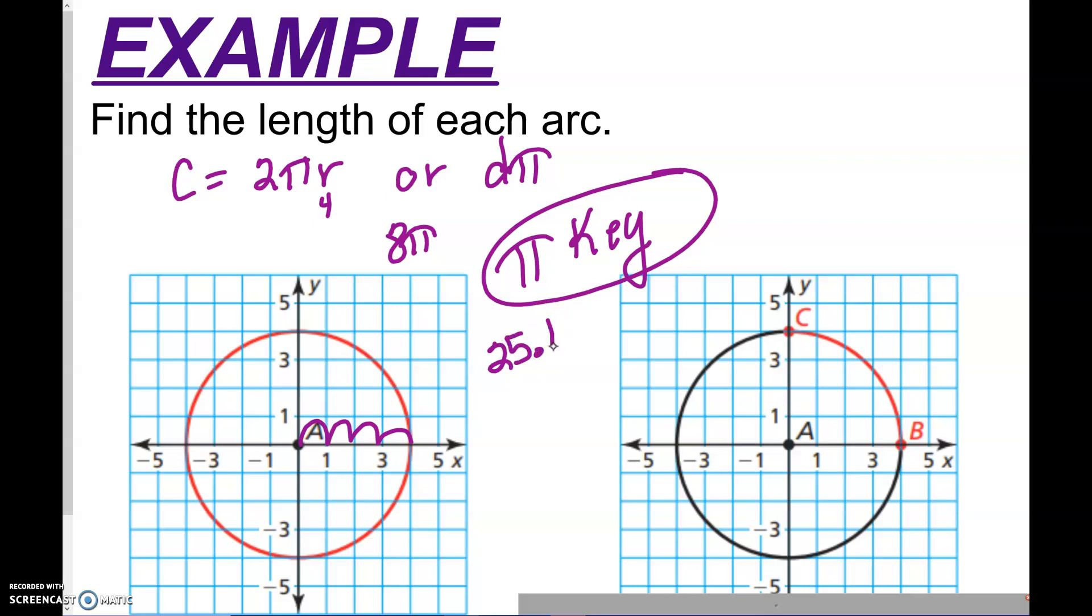All right, in the second one, it looks like we still have the same size radius. It is still going to be the length of 4. But now, we only want this arc from C to B.